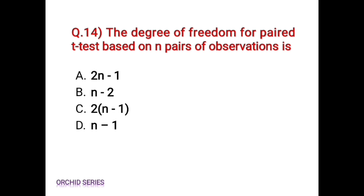The correct answer is Option D, n-1. The degree of freedom for paired t-test based on n pairs of observation is n-1.